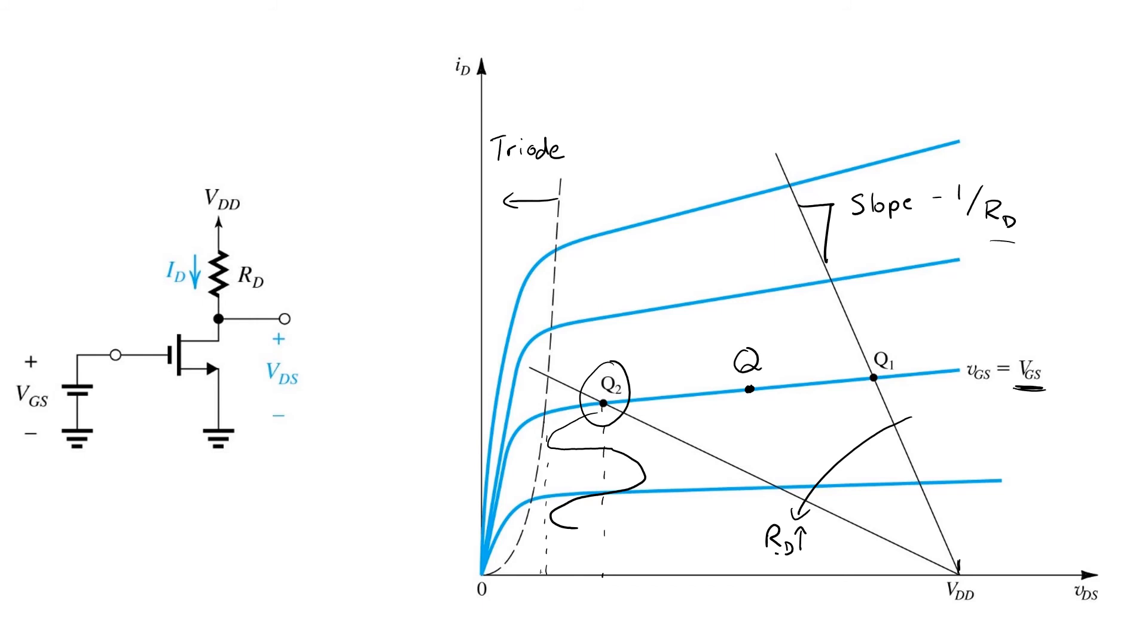does afford a higher gain. You'll notice that it takes a smaller change in VGS here to affect a larger change in output voltage than is the case for, say, the smaller value of RD corresponding to operating point Q1, where changing the input voltage from this blue curve down to this blue curve